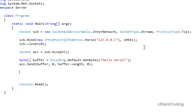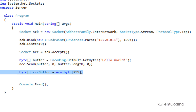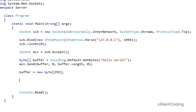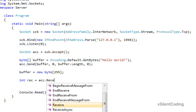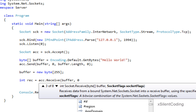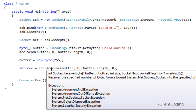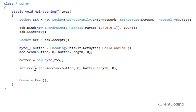Now we have to make a new buffer to receive data: new byte[255] — or we can just reuse our old buffer, which we'll do for memory efficiency. So: buffer = new byte[255], and int res = accept.Receive(buffer, 0, buffer.length, 0). What this does is wait for data that comes in from the connected socket and stores it in the buffer.